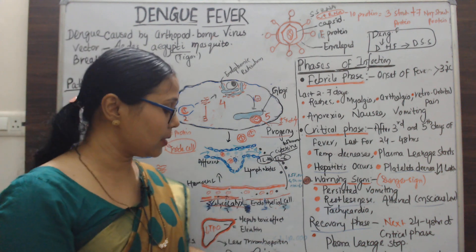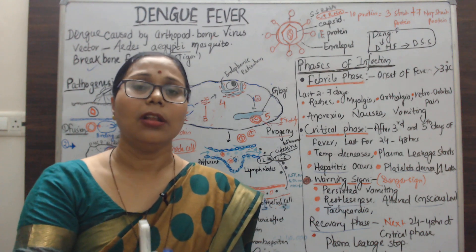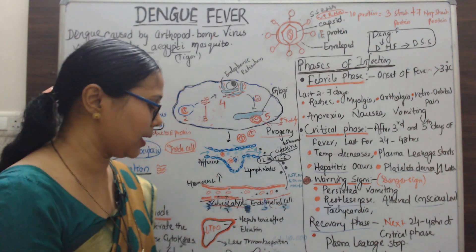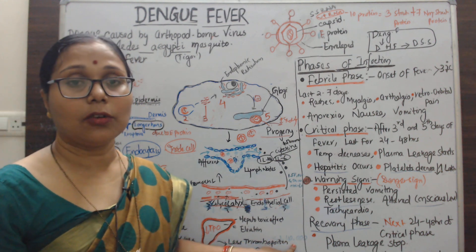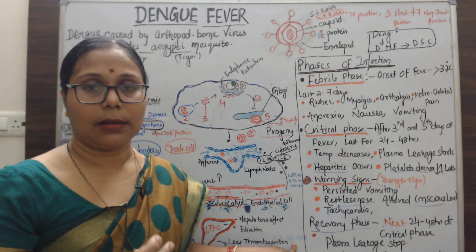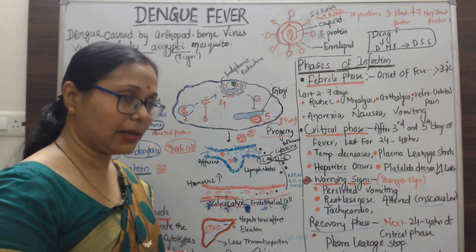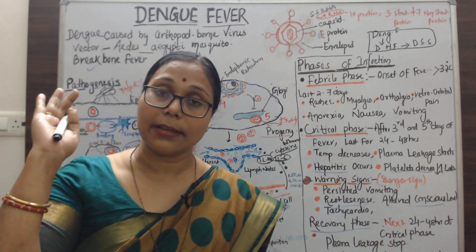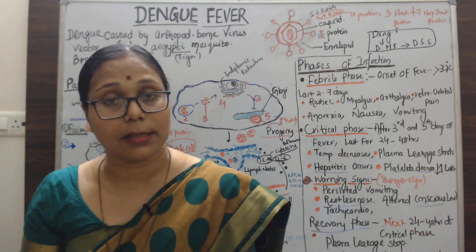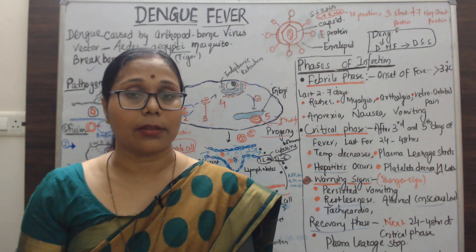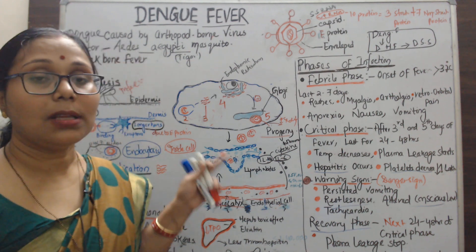The decreased platelet level causes petechiae — small red spots seen on the body surface. In critical cases, platelet levels may drop to around 80,000 or 40,000, the patient deteriorates, and life-threatening complications can occur. This covers the pathogenesis of how the dengue virus affects our body.